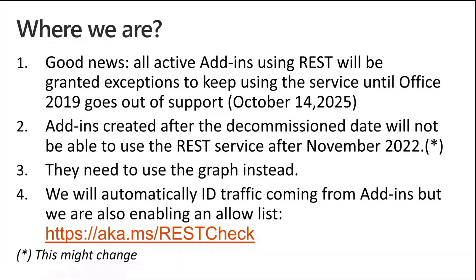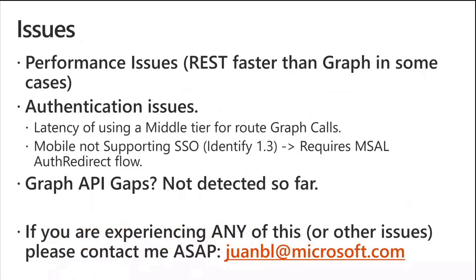That's where we are right now. I also want to share a few issues that some of you have been reporting. For example, in some cases the REST API is faster than the Graph API — specifically on loading attachments. The Graph API team is aware of all these potential issues and they are working to fix them as P1. If you're experiencing similar conditions or seeing that performance is not the same, please send me an email. I want to hear about it and work with the Graph team to solve those issues.